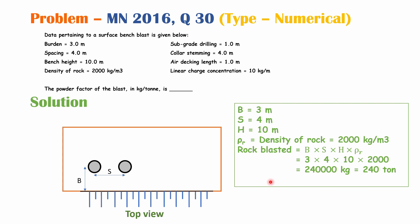From the top view, burden = 3 m and spacing = 4 m. Rock blasted per hole equals burden × spacing × bench height × rock density = 3 × 4 × 10 × 2000 = 240,000 kg, which is 240 tons.